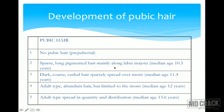Pubic hair development is also staged. Stage 1: pre-pubertal, no pubic hair. Stage 2: sparse, long, pigmented hair mainly along the labia majora. Stage 3: dark, coarse, curly hair sparsely spread over the mons. Stage 4: adult type, abundant but limited to the mons. Stage 5: adult type, spread in quantity and distribution.